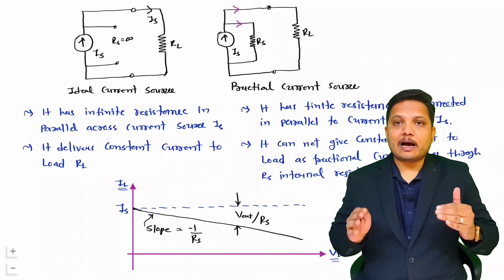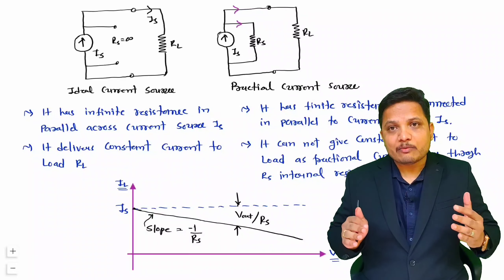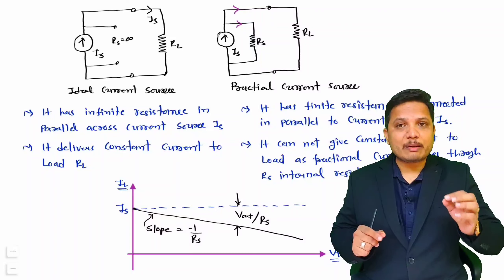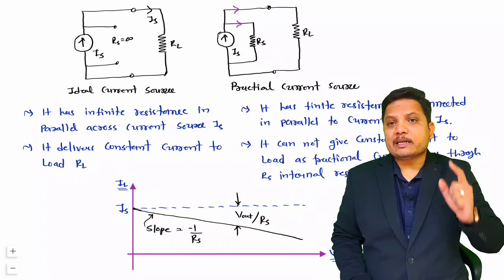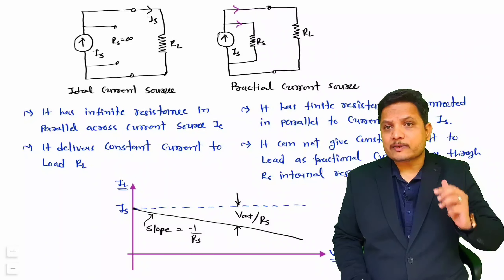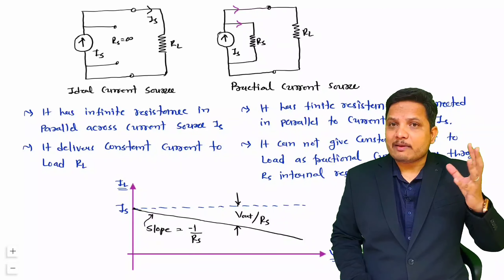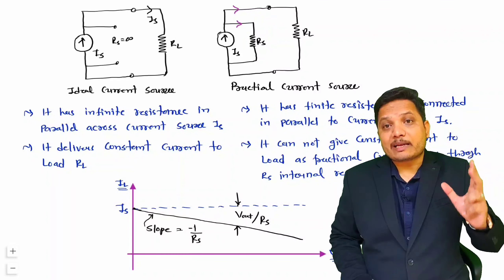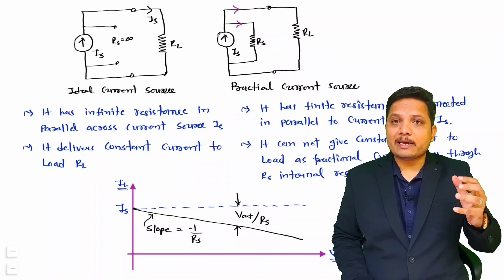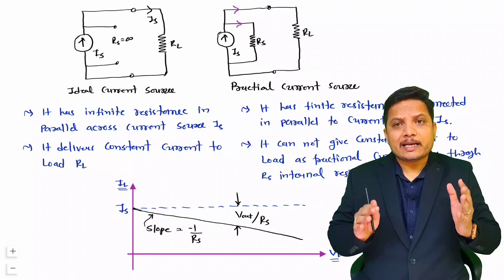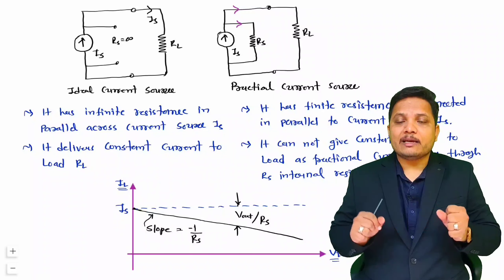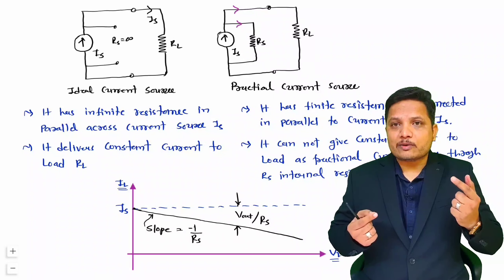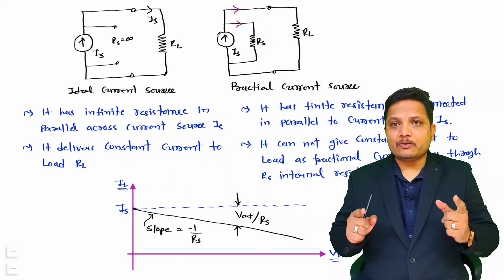I hope you have understood how ideal and practical voltage sources work, as well as ideal and practical current sources. Remember: for a practical voltage source, internal resistance is in series with the voltage source; for a practical current source, internal resistance is in parallel with the current source. That is why ideal voltage and current sources do not exist in practice — when designing circuits, you must consider internal resistance for both. Thank you so much for watching this video.